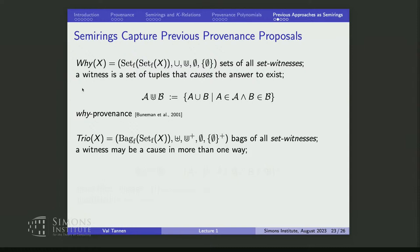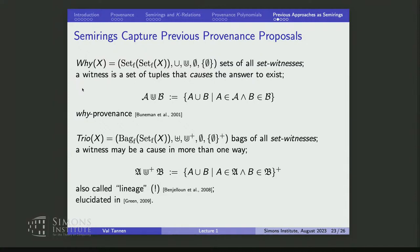In the TRIO project, T.J. Green had the idea of thinking of its provenance as bags of set witnesses — that is actually the right way to think about it. A bag is needed because a witness can be a cause in more than one way. This was also called lineage and was elucidated by T.J. in his PODS paper.